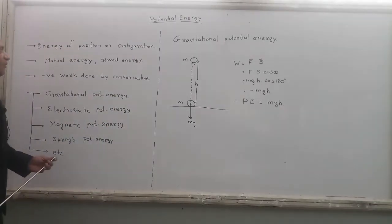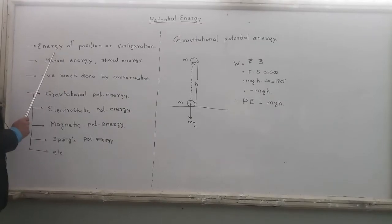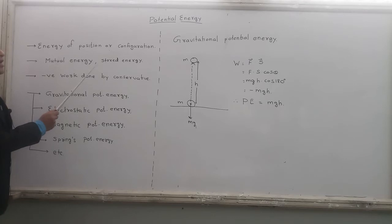What exactly is the meaning of potential energy? It is the energy possessed by a body due to its position or configuration. That means potential energy is the energy of position of the body and configuration of the body. These two things will decide the potential energy of the body. It is also known by the name of mutual energy or you can also call it as the stored energy. The energy which is stored inside the body is also called as potential energy.